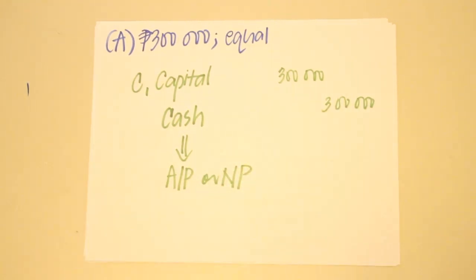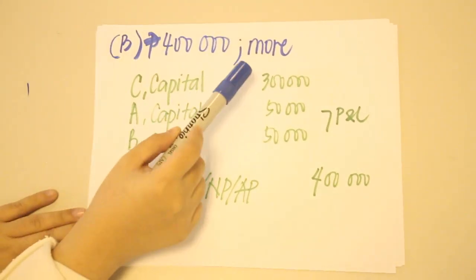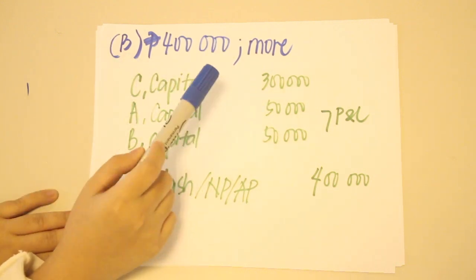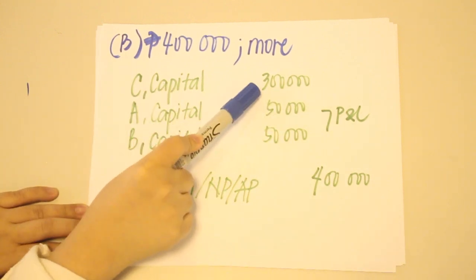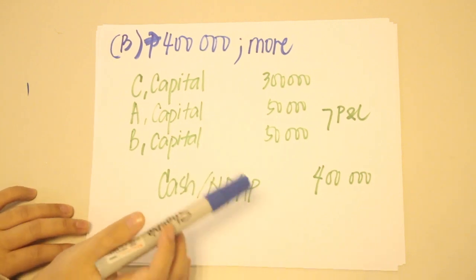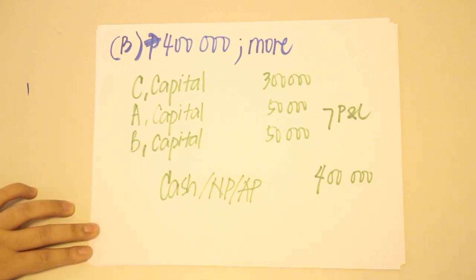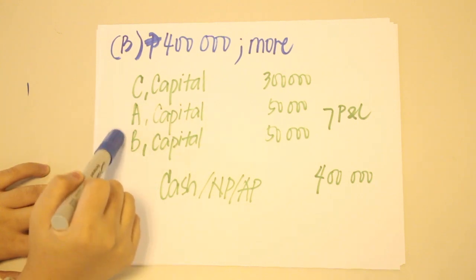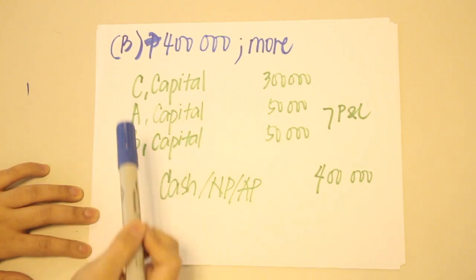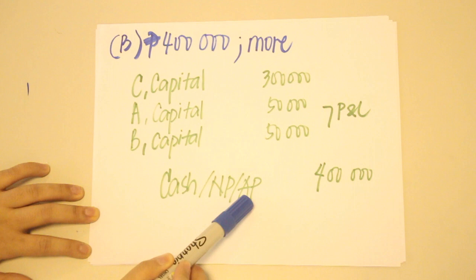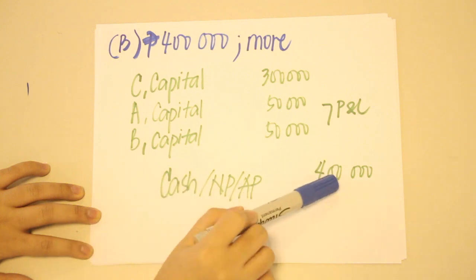In the second scenario, C is paid 400,000 by the partnership — more than his capital balance of 300,000. We debit C capital for 300,000, and the remaining 100,000 is divided between A and B according to their P&L ratio of 1:1, so A and B each receive a reduction of 50,000 in their capital balances — debited accordingly. We then credit cash, notes payable, accounts payable, or whatever form of payment was used for 400,000 pesos.